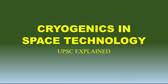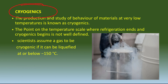Sab se pahle hum samjhaengay ki cryogenics kya hai. Cryogenics is the production and study of behavior of materials at very low temperature. We have gases like oxygen and hydrogen that exist in gaseous state at normal temperature and pressure. Lekin agar hum temperature ko bahut zyada kam kar dete hain to isko hum liquefy kar sakte hain. Scientists assume kara hai that if a gas can be liquefied at or below minus 150 degrees Celsius, then it is considered a cryogenic gas and it can be used in space technology.